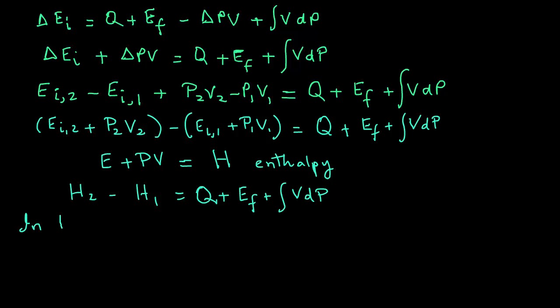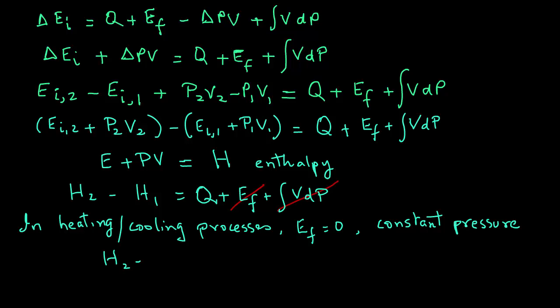So in a heating process, the energy related to friction is zero, and also the heating process, if it is carried out under constant pressure, which is true in many cases, we have H2 minus H1 equals Q, or we can also write that as the change in enthalpy equals Q. So this gives us the energy balance for a closed system.